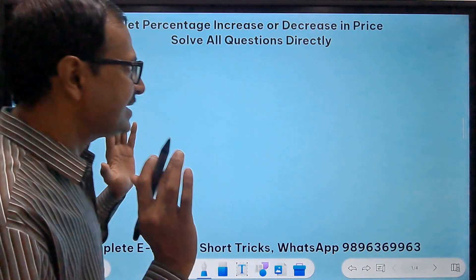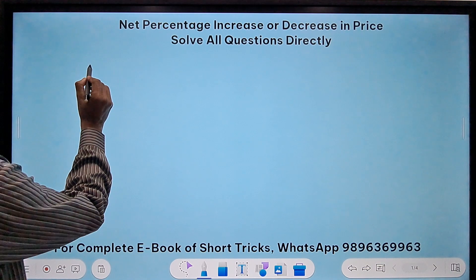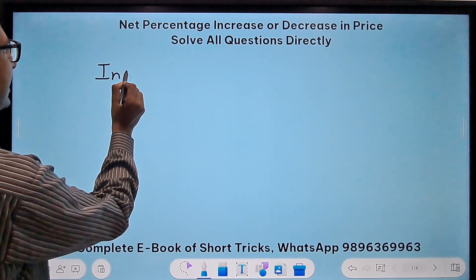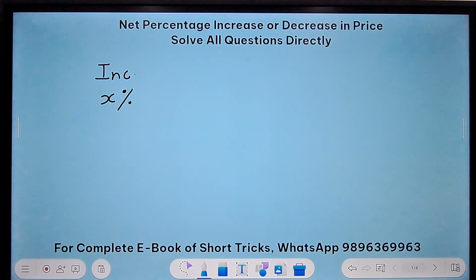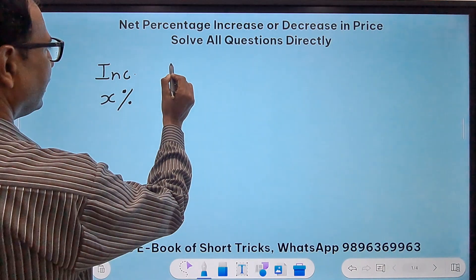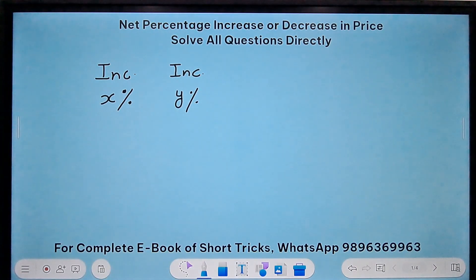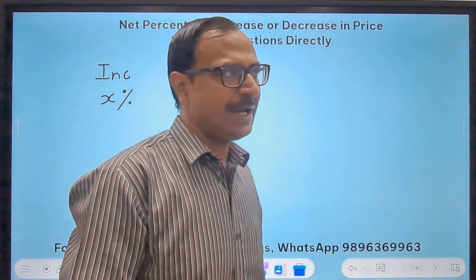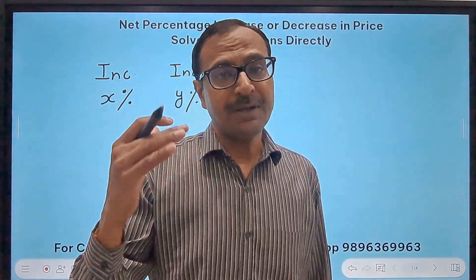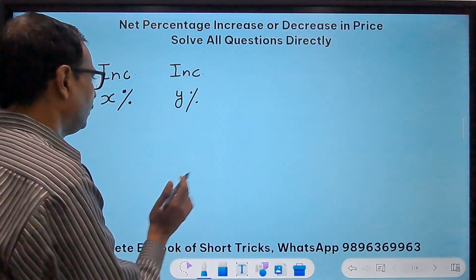Now let's get going with the first case. The first case is where first we have an increase of x% in the value of the commodity and then the same commodity increases yet another time by y percent. So there are two successive increases. You can assume 100 as the original value and get the answer, but it will involve lot of calculations. I will tell you both the direct method and traditional method.